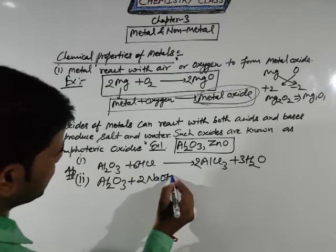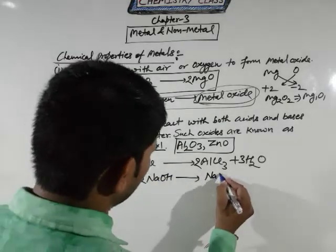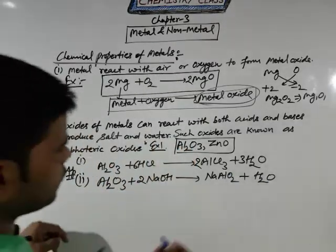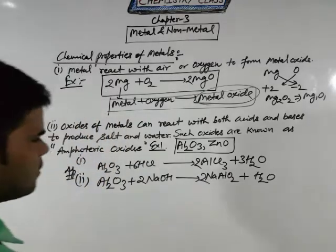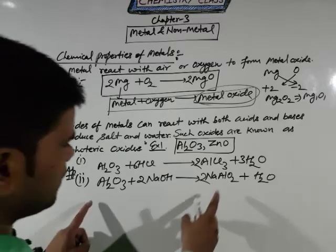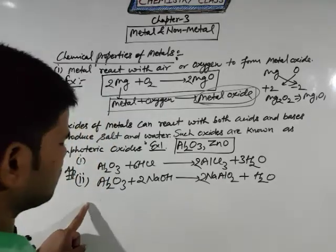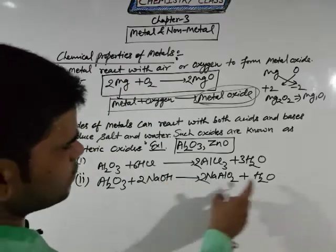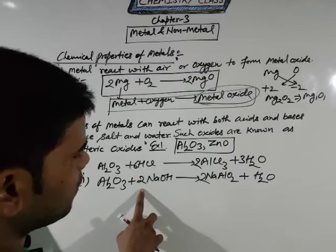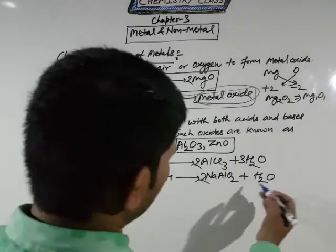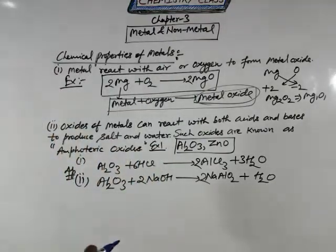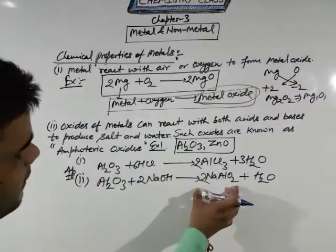In the case of base, this reaction is very important. Al₂O₃ reacts with NaOH to give NaAlO₂ and H₂O. To balance this equation: 2 sodium on the right side, 2 on the left side — sodium is balanced. Aluminium is also 2 on both sides — balanced. Hydrogen: 2 here and 2 there — balanced. For oxygen: 3 + 2 = 5, so 2×2 = 4 plus 1 = 5. This is the balanced equation.